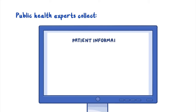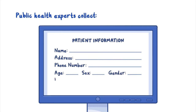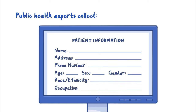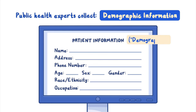Public health experts collect information about people and their disease, including the patient's name, address, phone number, age, sex, gender, race and ethnicity, and occupation. These personal characteristics collected about a person with a case of disease are called demographic information, sometimes demographics for short.